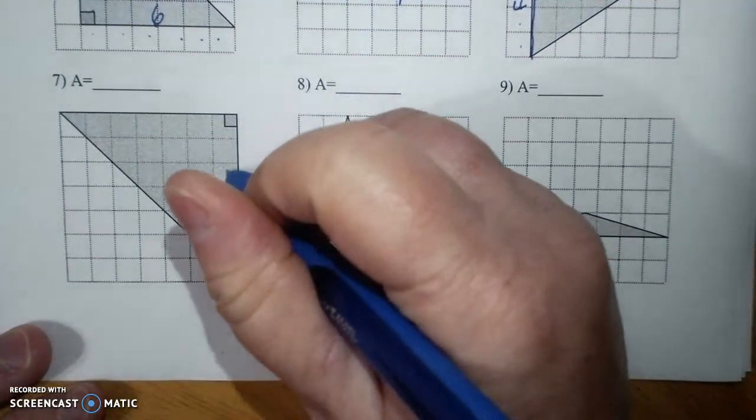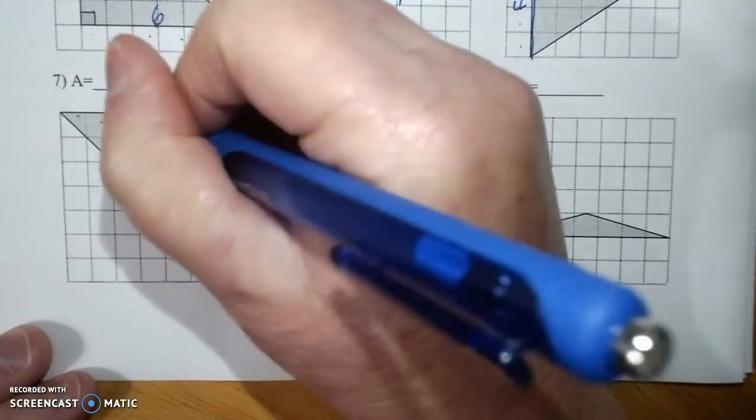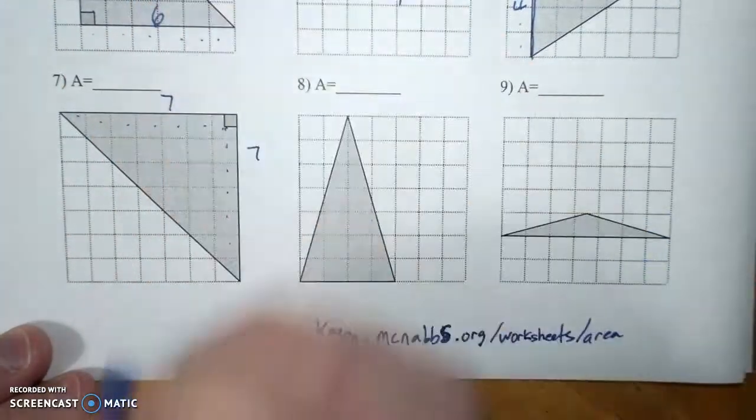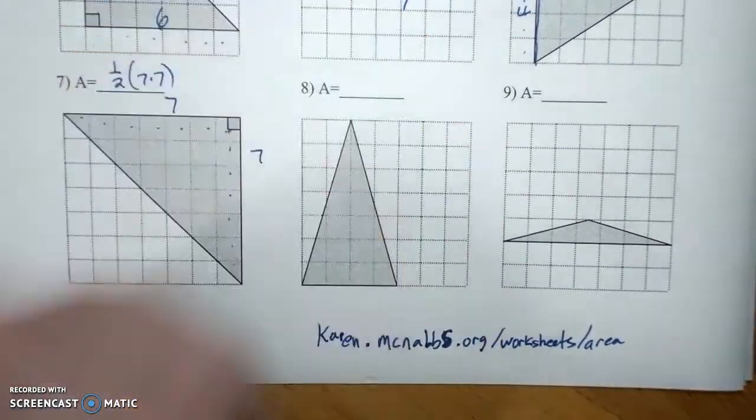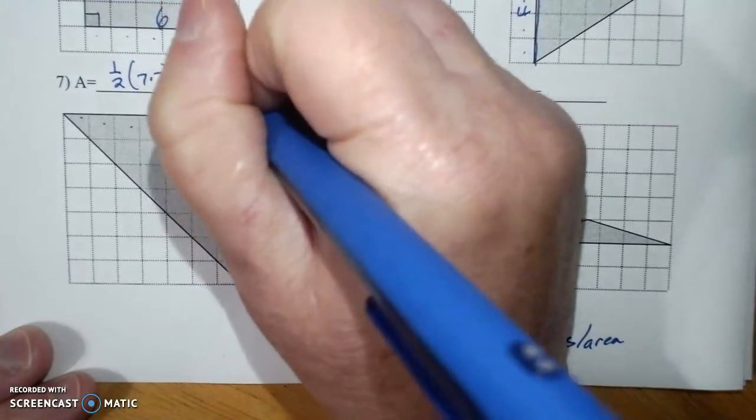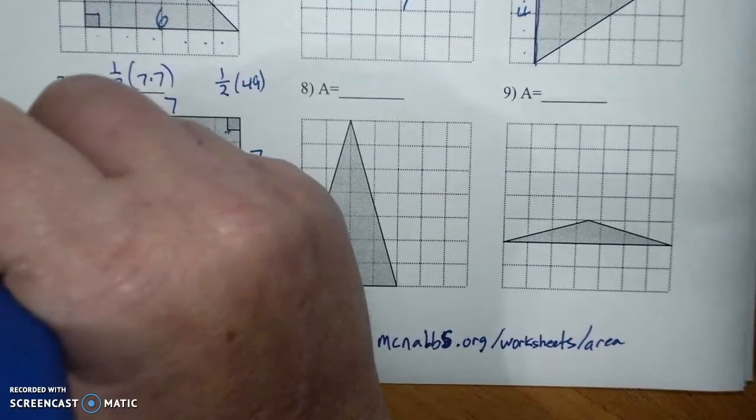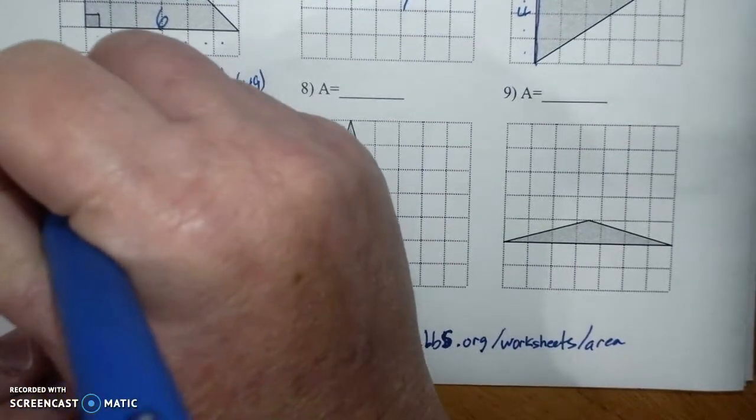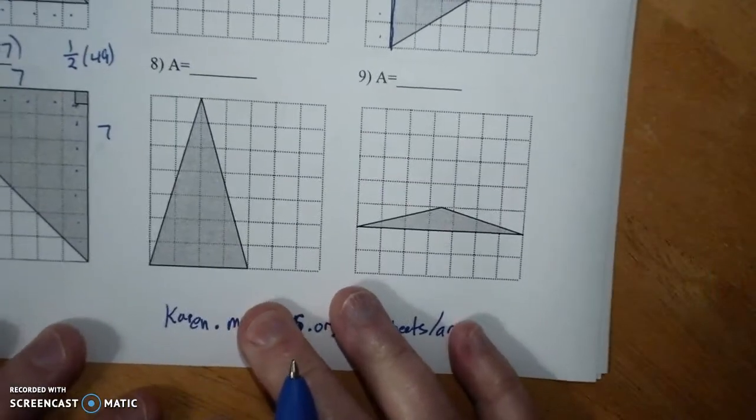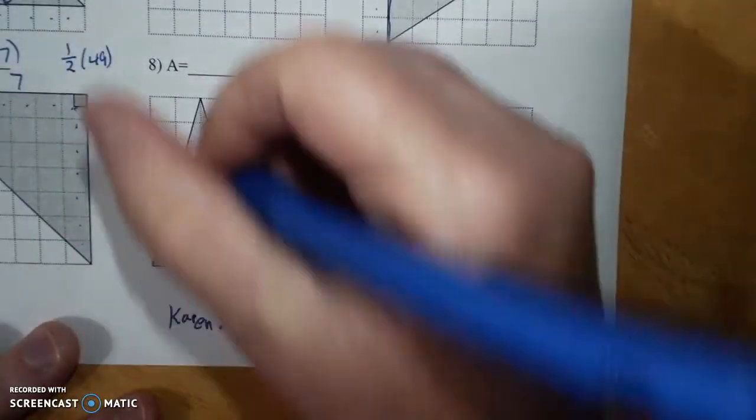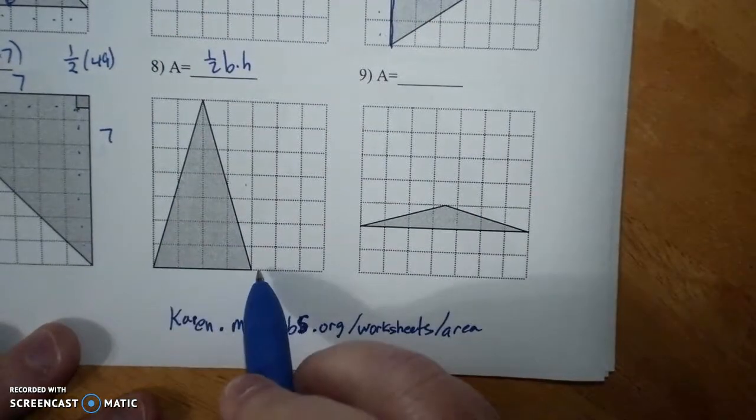Whether it's upside down or turn sideways or crooked on the right triangle, it's the legs. One, two, three, four, five, six, seven. One, two, three, four, five, six, seven. It's one half of seven times seven, which is one half of 49, which is 24.5 units squared. So, triangle is still one half base times height. You're going to find a flat side.